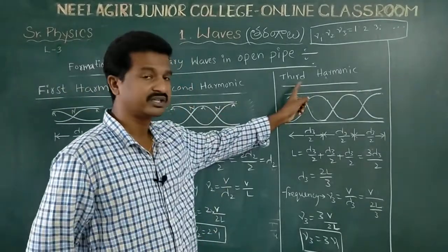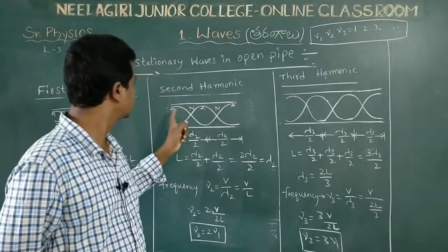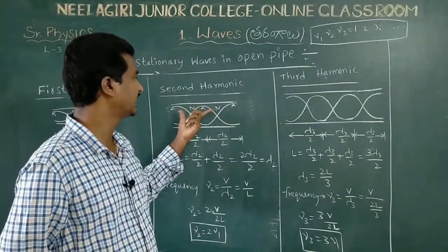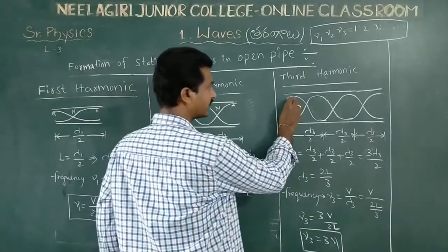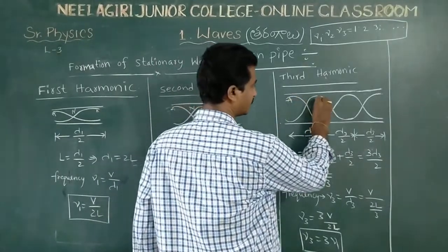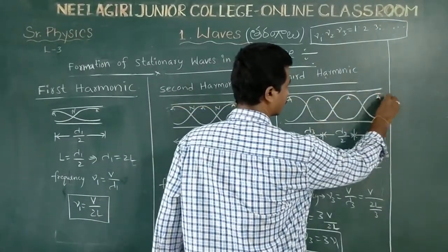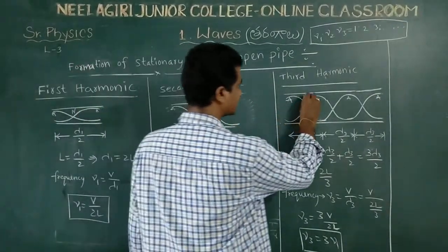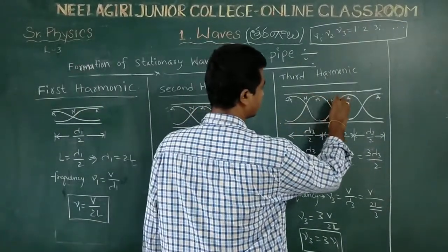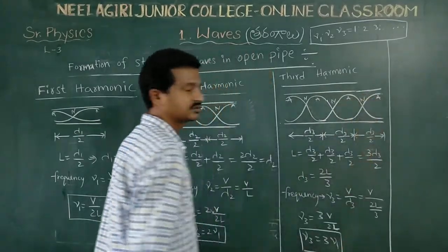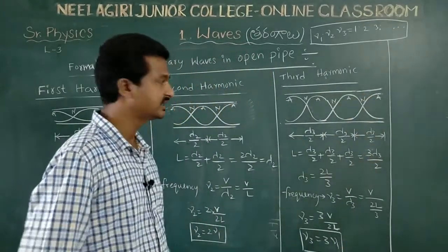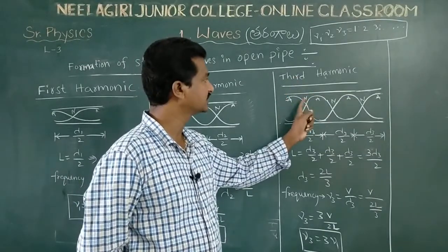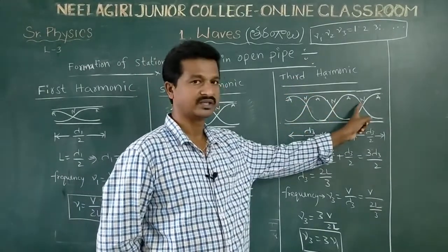Next, the third harmonic. The second harmonic has three antinodes; now for the third harmonic, we have four antinodes — one, two, three, four — and three nodes — one, two, three. So in the third harmonic, there are four antinodes and three nodes.